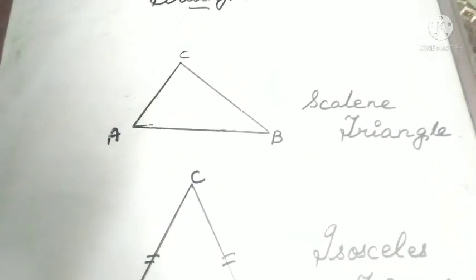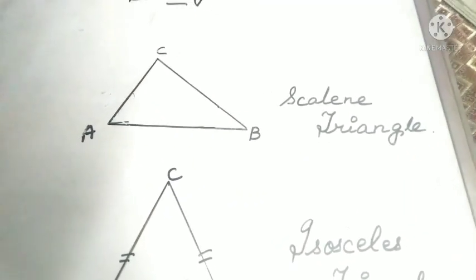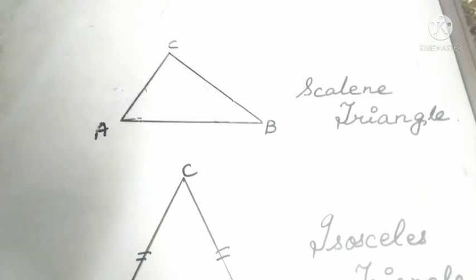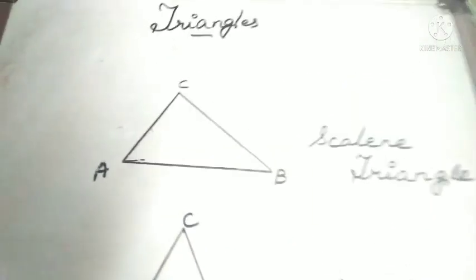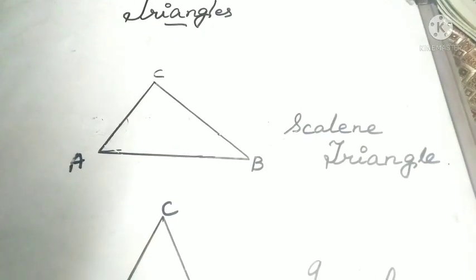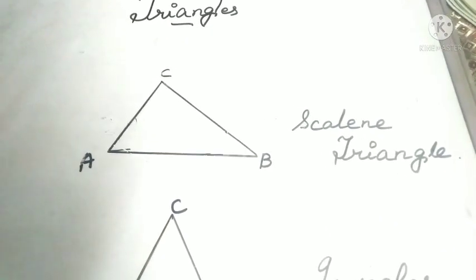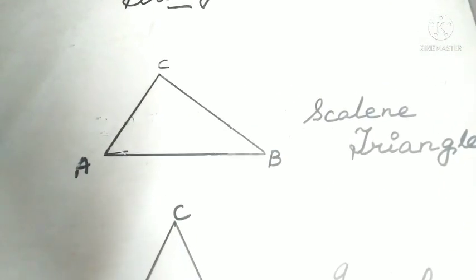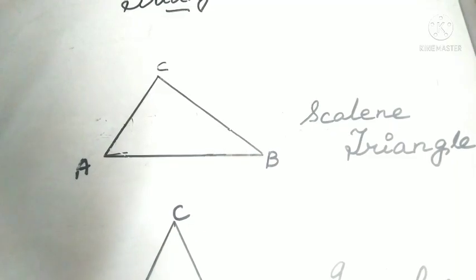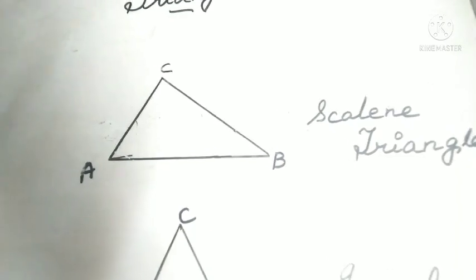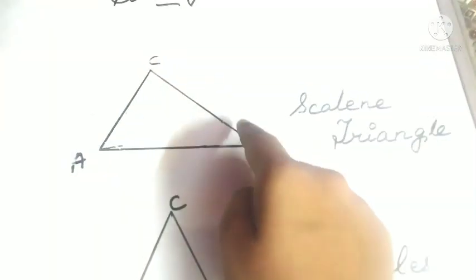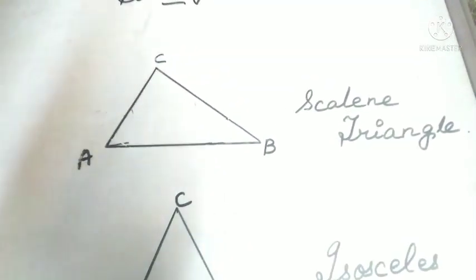First, we are going to learn what is a scalene triangle. A triangle whose all three sides are unequal is known as a scalene triangle. Triangle ABC is a scalene triangle as all its sides are unequal.